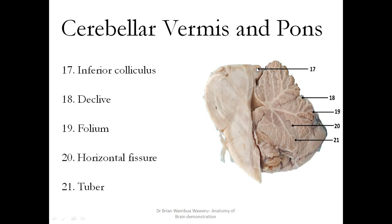Then this is the inferior colliculus. This is the superior cerebellar system. Then you have the declive, the folium, the horizontal fissure, and the tuber of the vermis of the cerebellum.